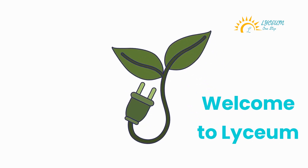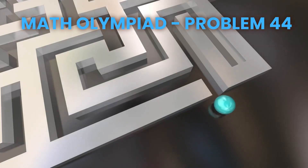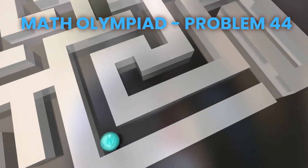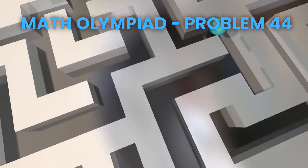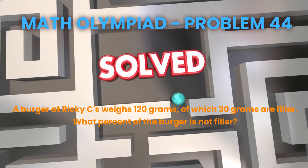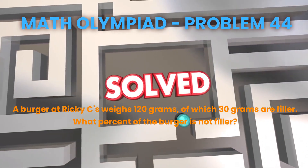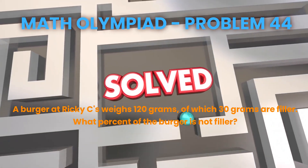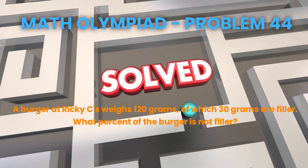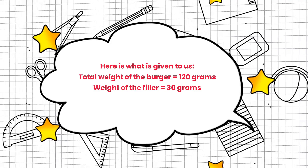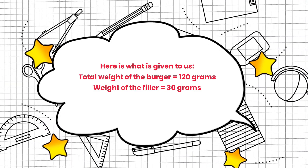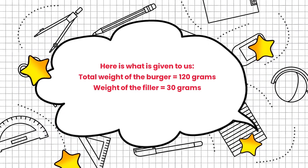Welcome to Lyceum Math Olympiad Problem 44. A burger at Ricky C's weighs 120 grams, of which 30 grams are filler. What percent of the burger is not filler? Here is what is given to us.